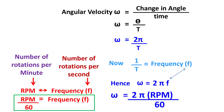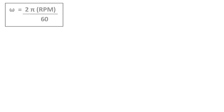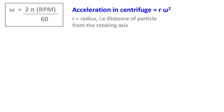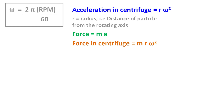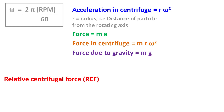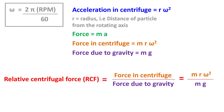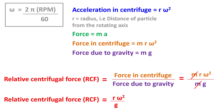So omega equals 2 pi times (RPM divided by 60). Now acceleration in a centrifuge is given as r omega squared, where r is the distance from the rotating axis. Force is the product of mass and acceleration, so force in centrifuge equals m r omega squared. The force due to gravity will be mg. So the Relative Centrifugal Force RCF equals force in centrifuge divided by force due to gravity, which equals m r omega squared divided by mg. Therefore RCF equals r omega squared divided by g.